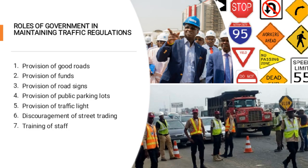Rules of government in maintaining traffic regulations. 1. Provision of good roads — the government should ensure the roads are smooth, wide enough and safe for road users. 2. Provision of funds — the government should ensure the appropriate agencies such as the Federal Road Safety Commission have adequate funds to work with. 3. Provision of road signs — road signs should be placed at appropriate locations.